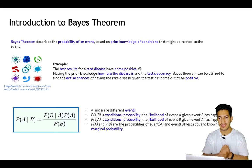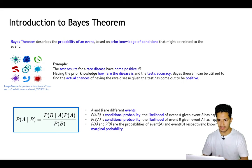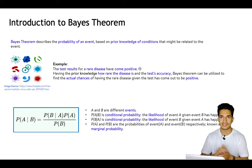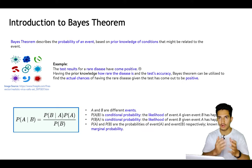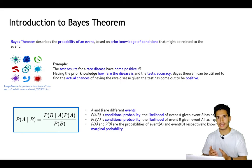Next, we will look at what is Bayes theorem. Bayes theorem helps us describe the probability of an event with more confidence based on prior knowledge of conditions that might be related to the event. For example, if a test result of a rare disease comes positive, we can use Bayes theorem with prior knowledge of how rare the disease is and how accurate the test is to find the actual probability that the person has the disease.